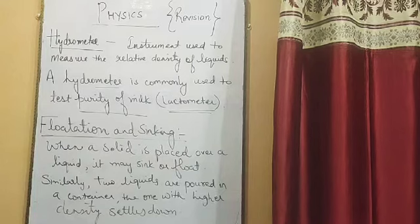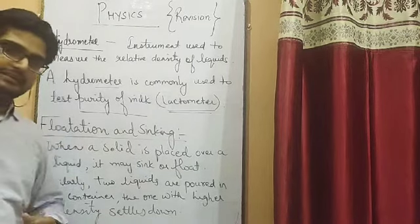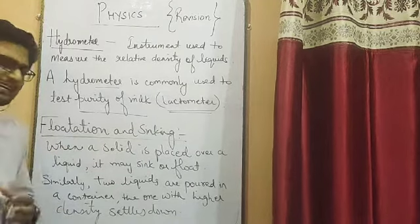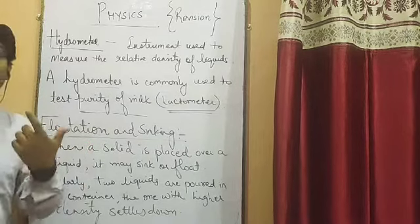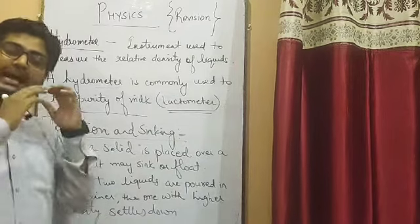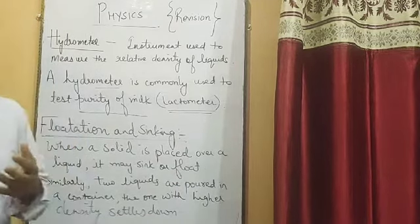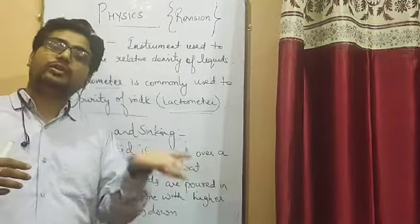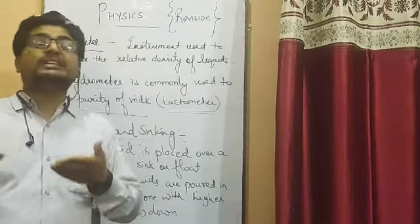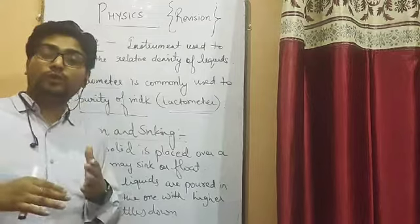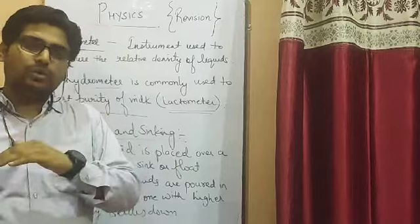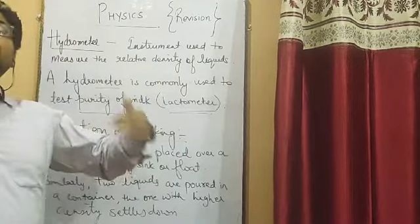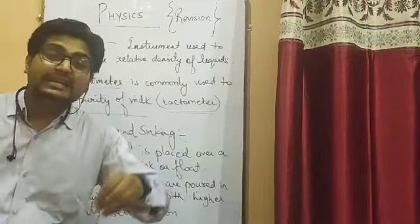Now let us talk about flotation and sinking. When a solid or any object is placed on a liquid, it may sink or float. The condition is: if the density of the solid is less than the density of the liquid, the object will float. If the density of the solid is equal to the density of water, it will partially float — half the body will be out of the water and half inside. If the object's density is more than water, it will completely sink.